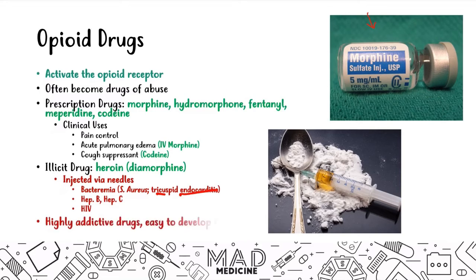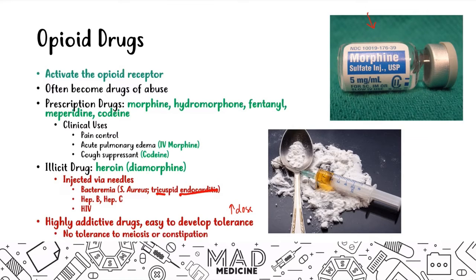All of these are very addictive drugs, and it's easy to develop tolerance — meaning you'll need to increase your dosage over time. One important thing to understand is that peripheral nervous system effects usually do not develop tolerance. So constipation and miosis — the very small narrowing of the pupil — are not things patients become tolerant to. It's the CNS effects like euphoria and reduced pain where tolerance develops.